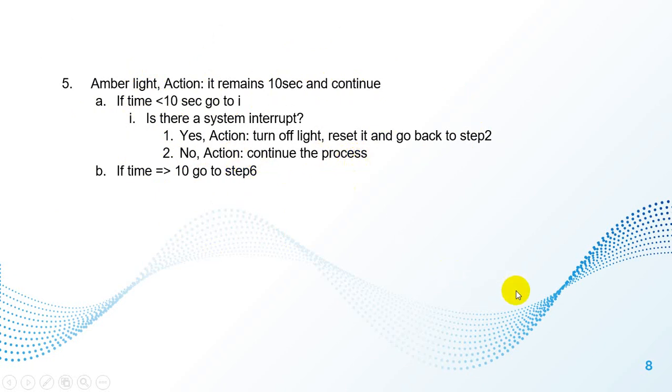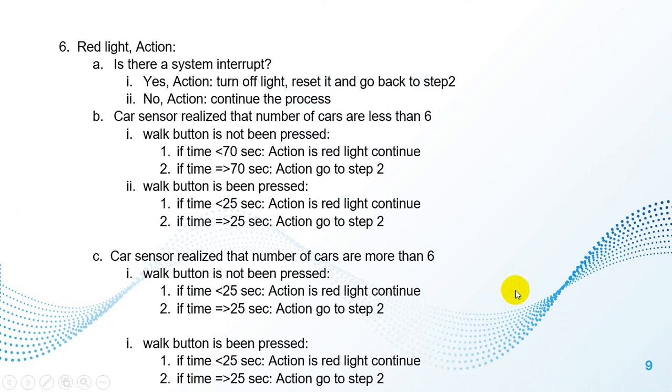And the last state that we have is the red light. As I said before, we have two conditions in this state: pedestrian when the pedestrian pushes the walk button, and also when we have more than six cars. And as you can see in this slide, I describe all of the states in the red button.